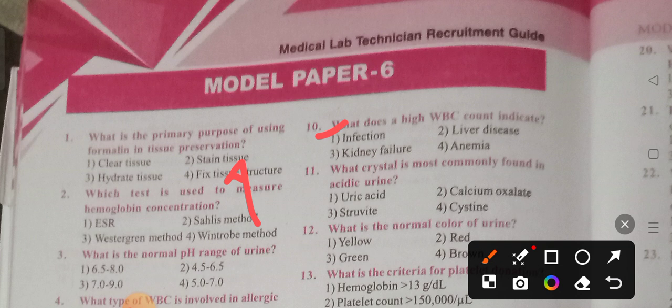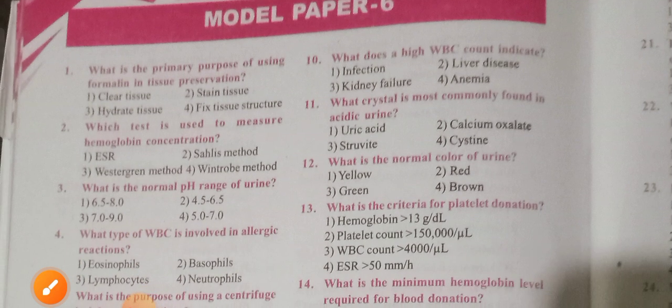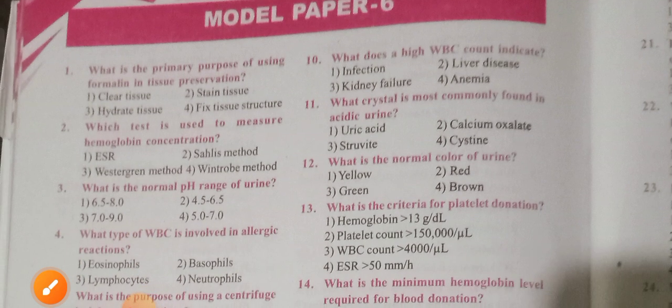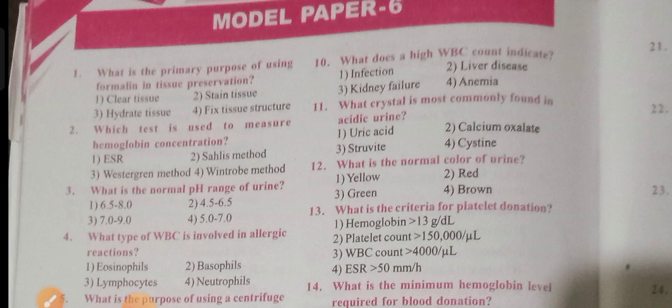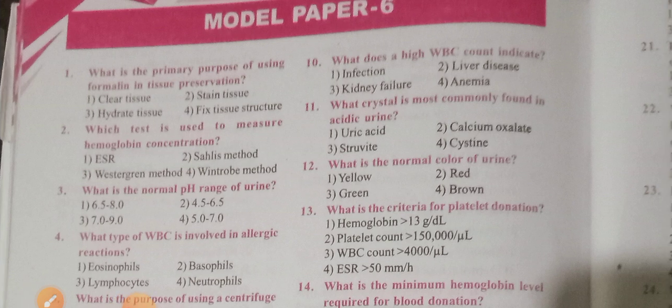Question 11: Which crystal is most commonly found in acidic urine? The options are: calcium oxalate, struvite, cysteine. Option 2 is the correct answer — calcium oxalate is most commonly found in acidic urine.